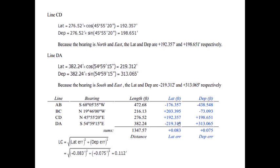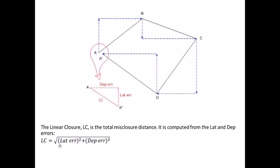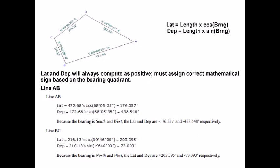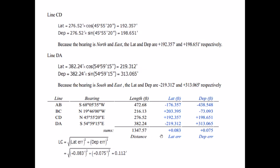Once we have all latitudes and departures, we take the sum, which should be equal to zero if the closed traverse was plotted correctly. But if the summation is not equal to zero after computing, that means there is error in the traverse and it needs balancing. Once we have the error in latitude and the error in departure, we calculate the total misclosure distance, also called the total linear closure error, using the equation: square root of the sum of squared latitude error and squared departure error. Using this, we get a total misclosure error of 0.112.